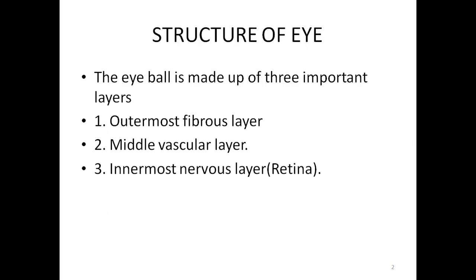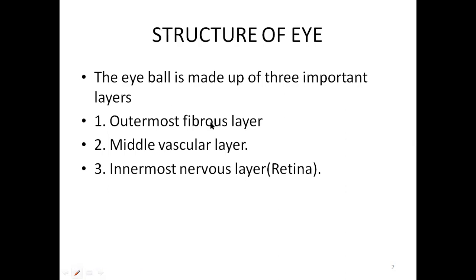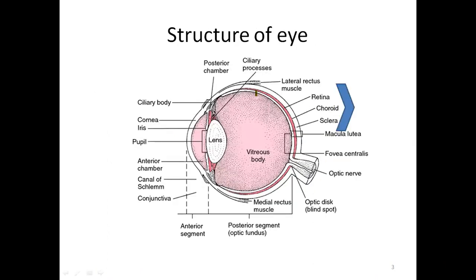We have three important layers. Number one, an outermost fibrous layer; a vascular layer, the middle one; and a very important layer, that is the retina — it is the light-perceiving layer. This is the structure of the eye: the outermost sclera, the colored portion called the choroid, and the innermost layer — the retina. The eyeball lens, ciliary body, and iris can also be seen here.